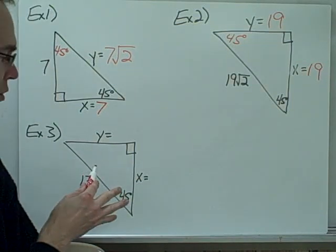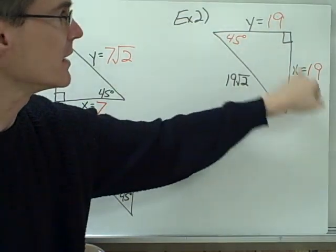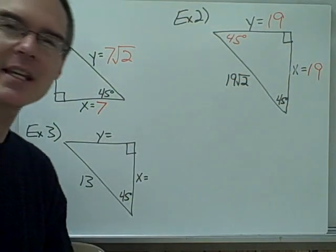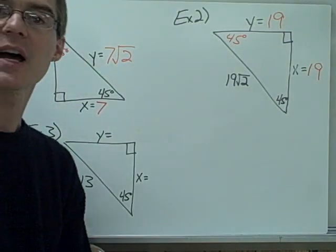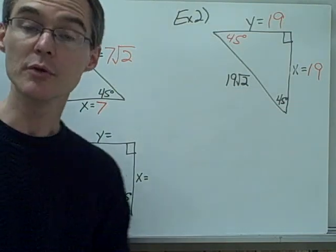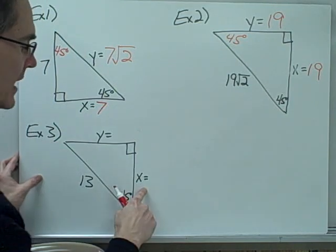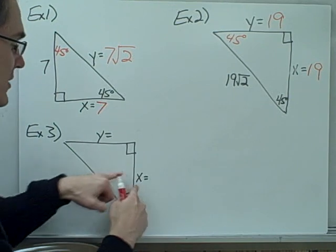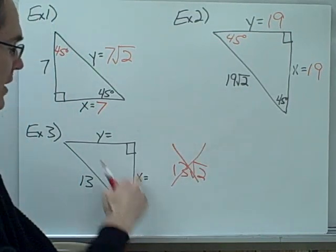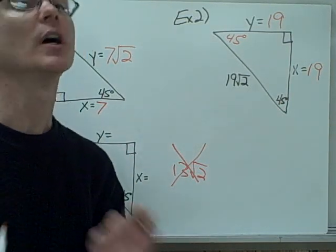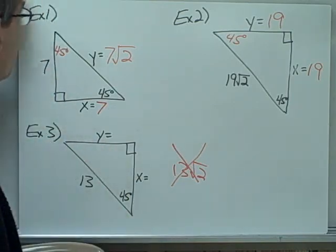Example 3 is more challenging. In Example 2, the hypotenuse was given in terms of √2, which made it easy to find the legs. In Example 3, the hypotenuse is just a regular whole number — 13 — which requires more work. I'll leave this one for you, but be careful: it's tempting to say the legs are 13√2, which is not correct. You'll need to use one of at least three different methods to find X and Y.